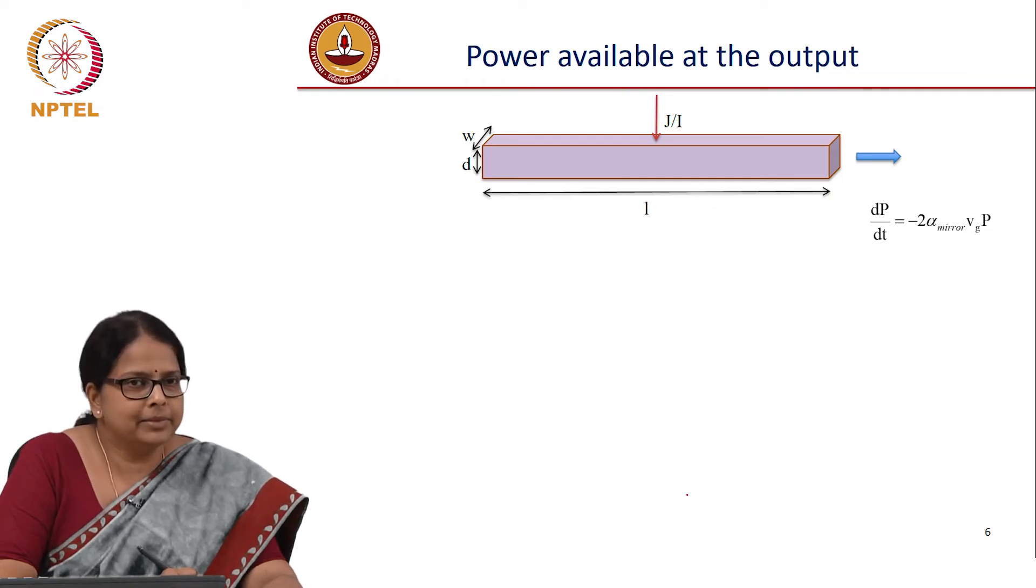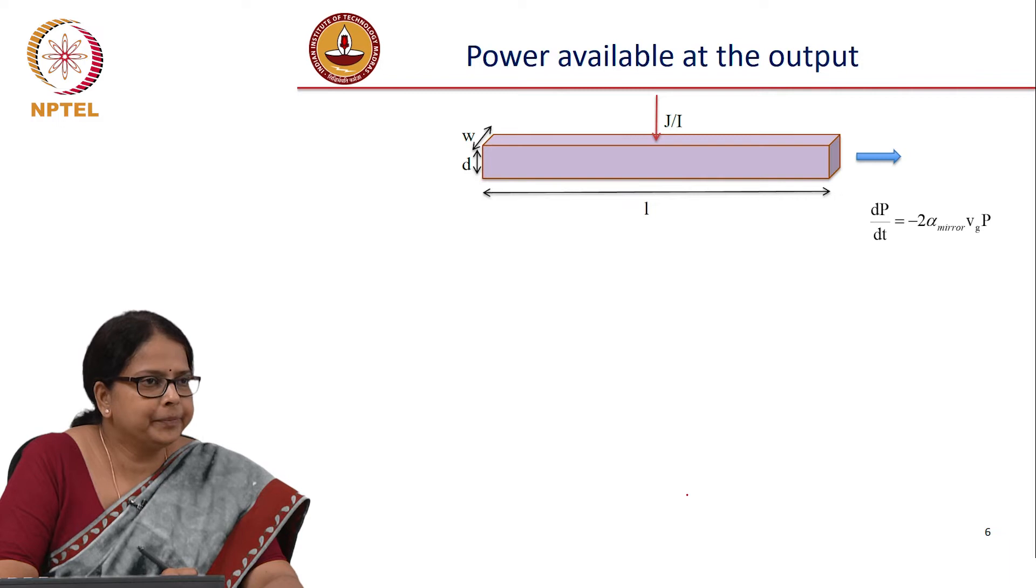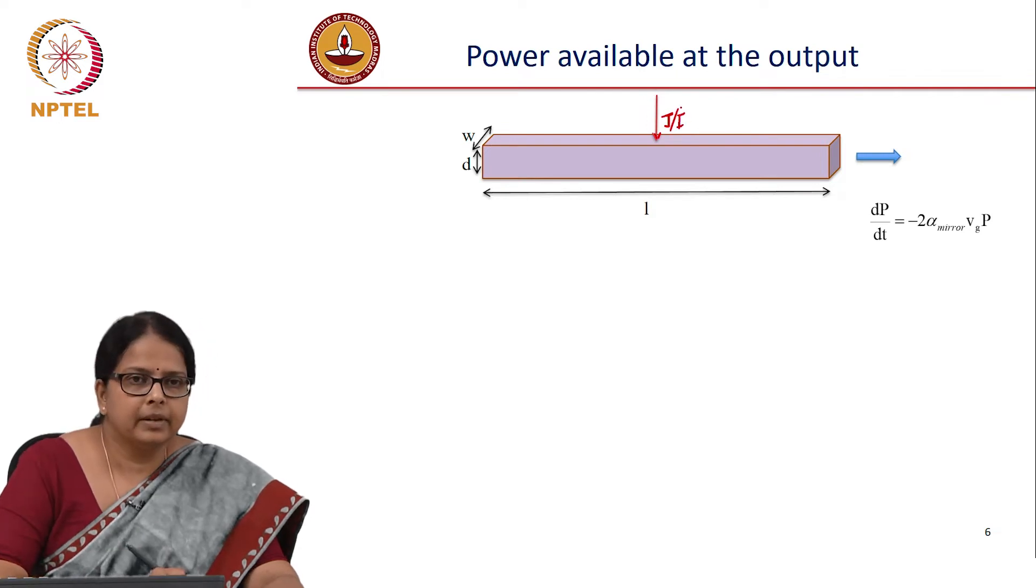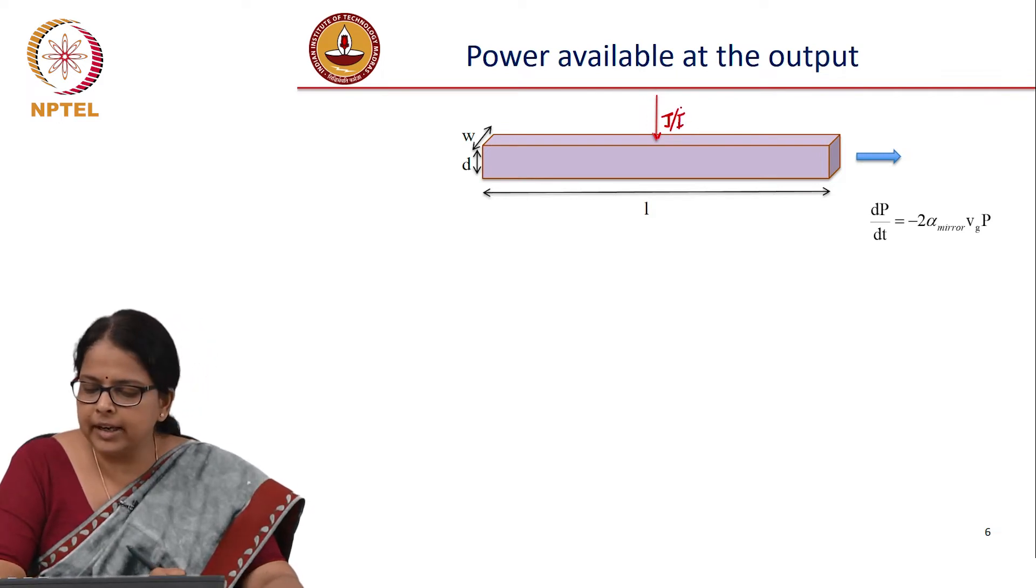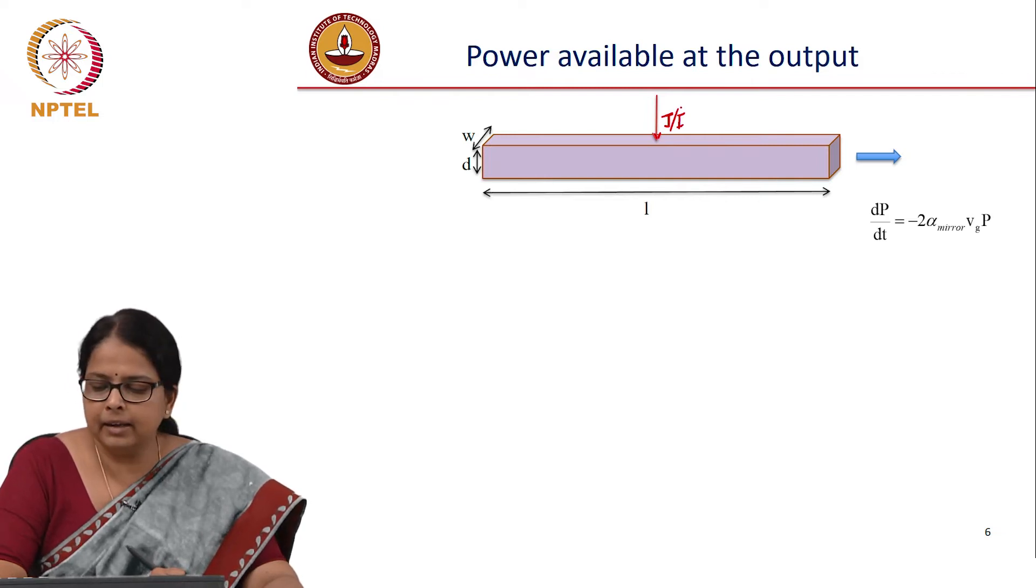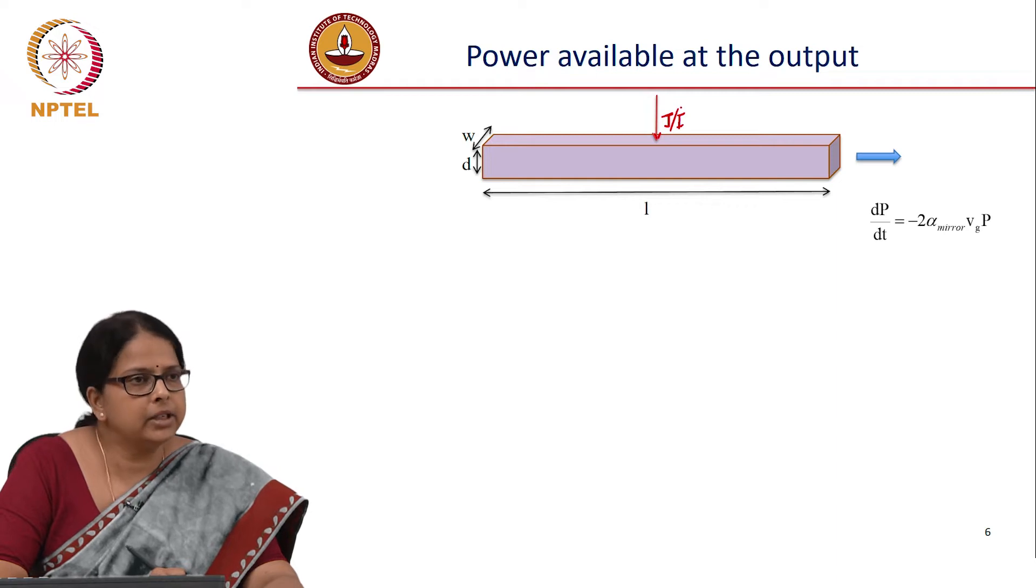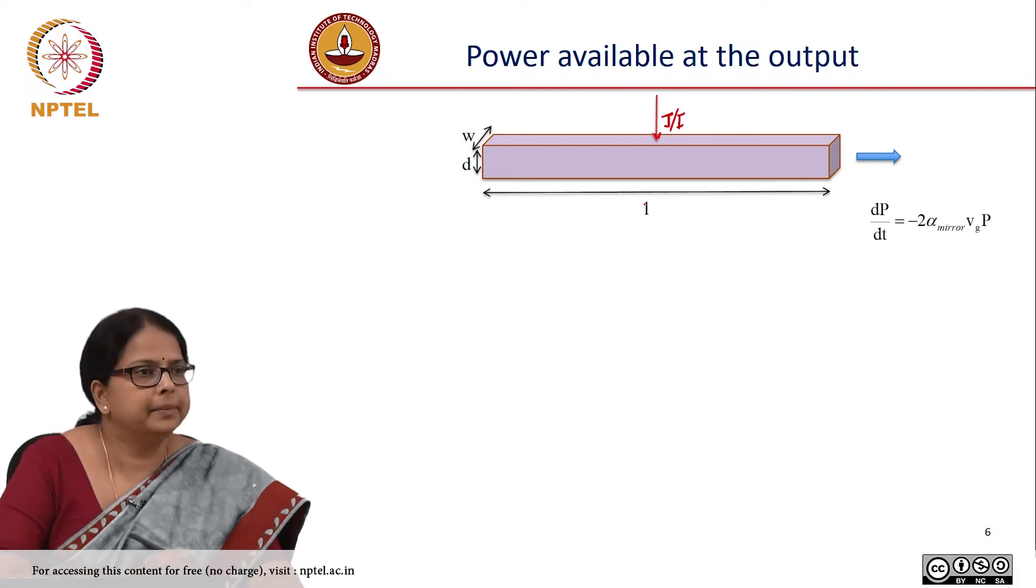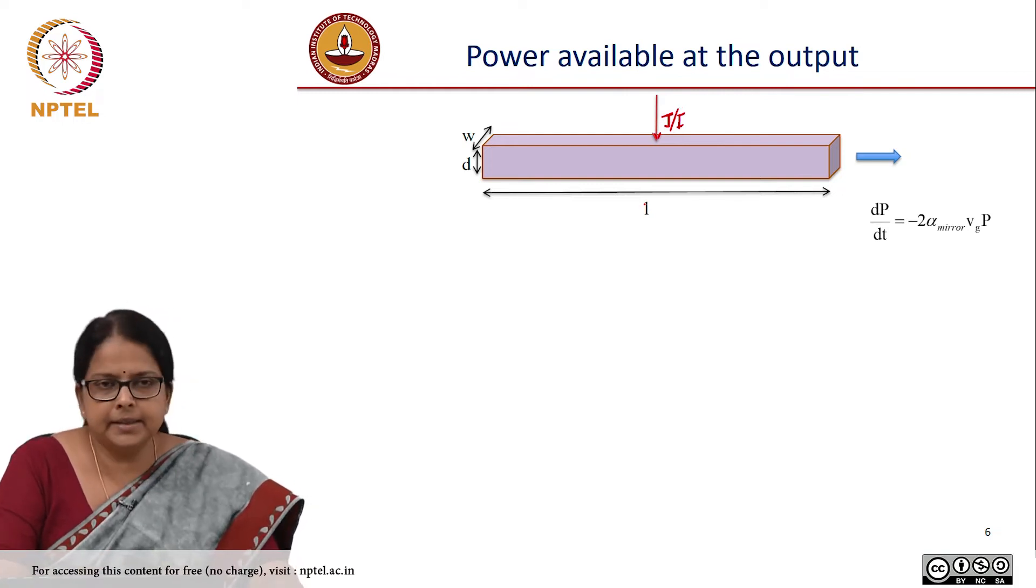I consider the system, this is my active medium. This is where I am injecting, let's say this is the current density or current. How do you relate J to I? I by area is your J, and area is W into L, and D is the thickness.